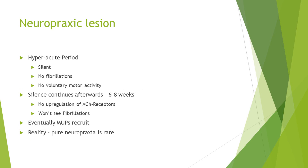Let's take a neuropraxic lesion. In the hyperacute period, the muscle will also be silent — there will be no fibrillations and no voluntary motor activity. However, that silence will continue afterwards for quite a few weeks, around six to eight weeks or so, because there is no upregulation of the acetylcholine receptors and so you won't see the fibrillations. You also won't see voluntary motor activity because of the physiological blockage. Eventually the motor unit potentials will recruit; however, in reality pure neuropraxes are actually quite rare.